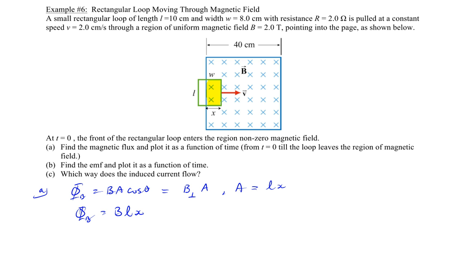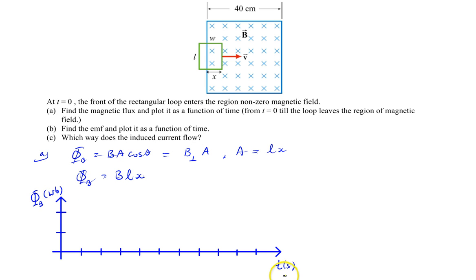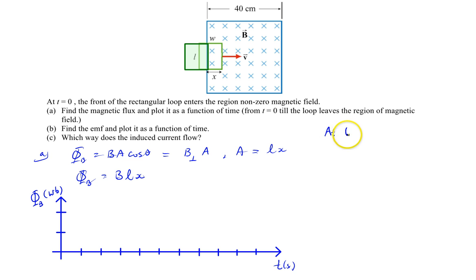Let's start to construct our graph, where we plot the magnetic flux on the y-axis, based on the area enclosed by the loop within the field, versus time along the x-axis — labeled with flux in Webers and time in seconds. At t equals 0, the right side of the loop is just starting to enter the field. Since x is 0, our magnetic flux is BLx, but x is 0, so there is no flux. At time 0 seconds, we have 0 magnetic flux.